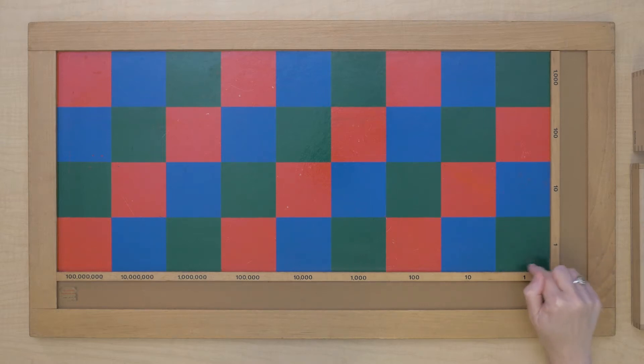We've got a green square for our units here, blue for tens, red for hundreds, and then units of thousands, tens of thousands, hundreds of thousands. And we go all the way up to 100 million on this board.